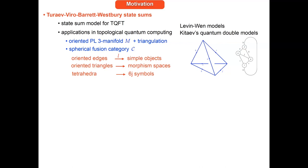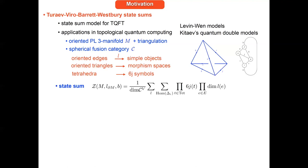Geometrically, one takes the dual of the two-skeleton of the tetrahedron — a dot on every triangle, connected with dual edges — and this picture is viewed as a diagram in a spherical fusion category. One has a morphism from object b to a tensor k, another morphism from a to i tensor j. One starts and ends with b, and the rest denotes the trace in the spherical fusion category. Alternatively, it encodes the associator on the simple objects — a complex number. Then the state sum is defined by taking the product over all these complex numbers for the different tetrahedra, multiplying by the dimension of the object labeling each edge.